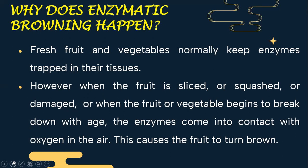Fresh fruits and vegetables normally keep enzymes trapped in their tissues. However, when the fruit is sliced, squashed, or damaged, or when the fruit or vegetable begins to break down with aging, the enzymes come in contact with the oxygen in the air. This causes the fruit to turn brown.